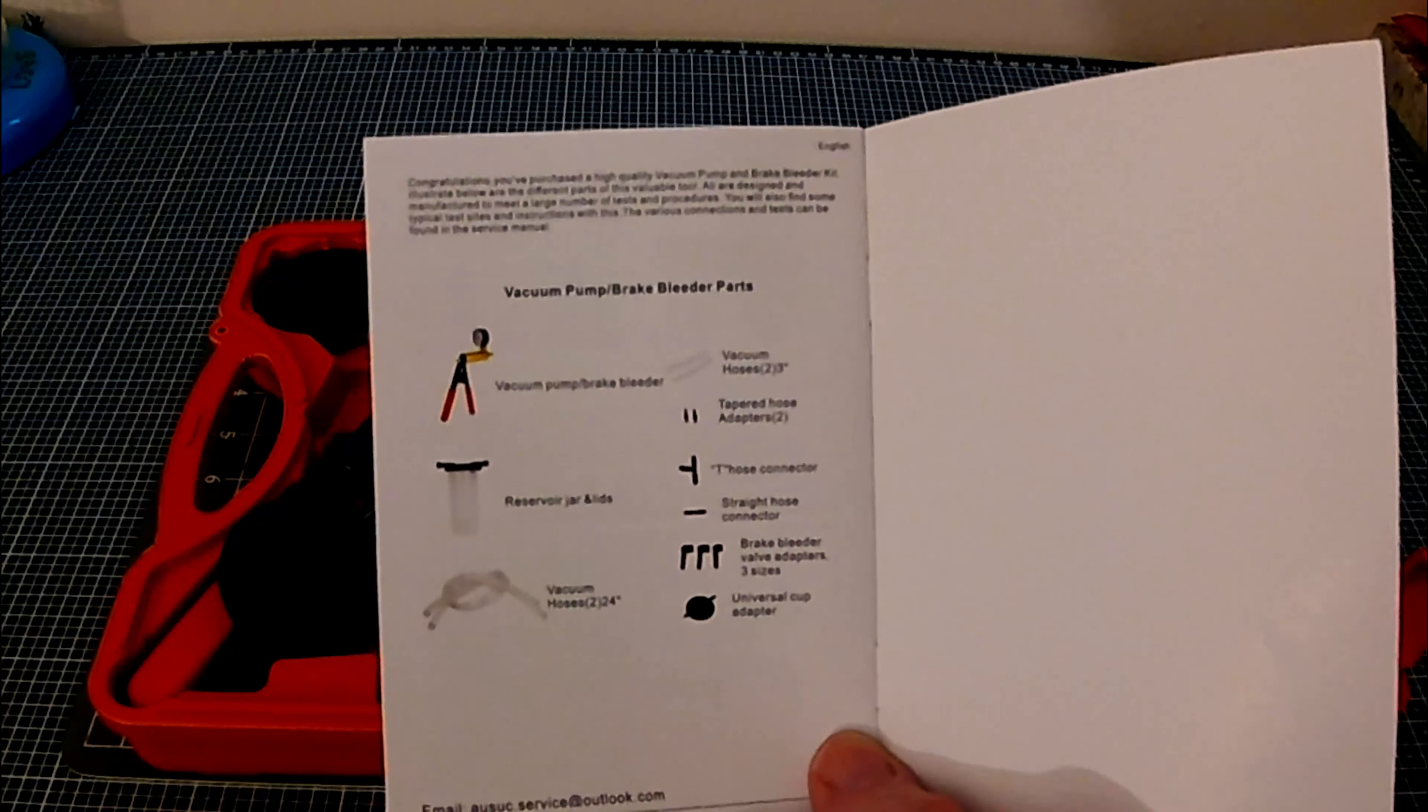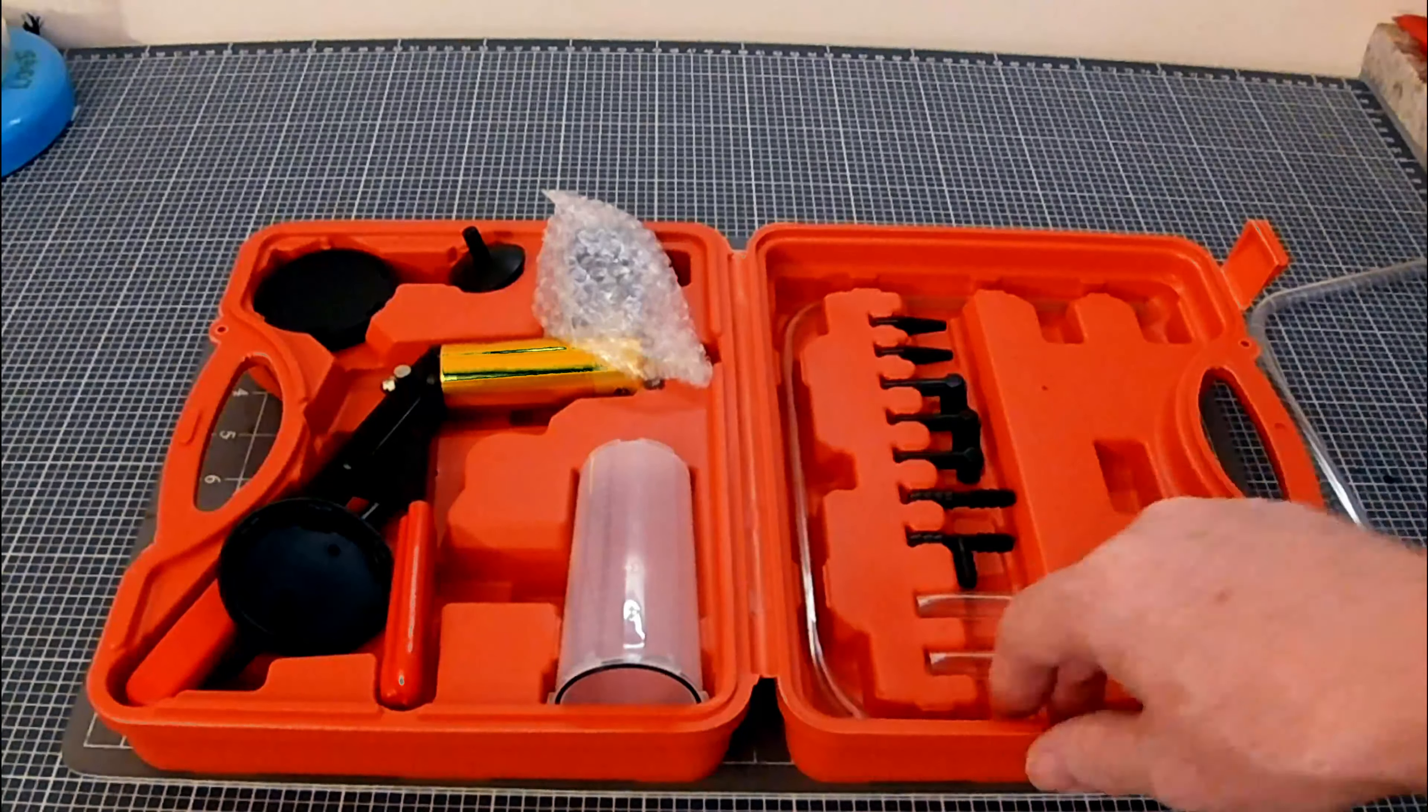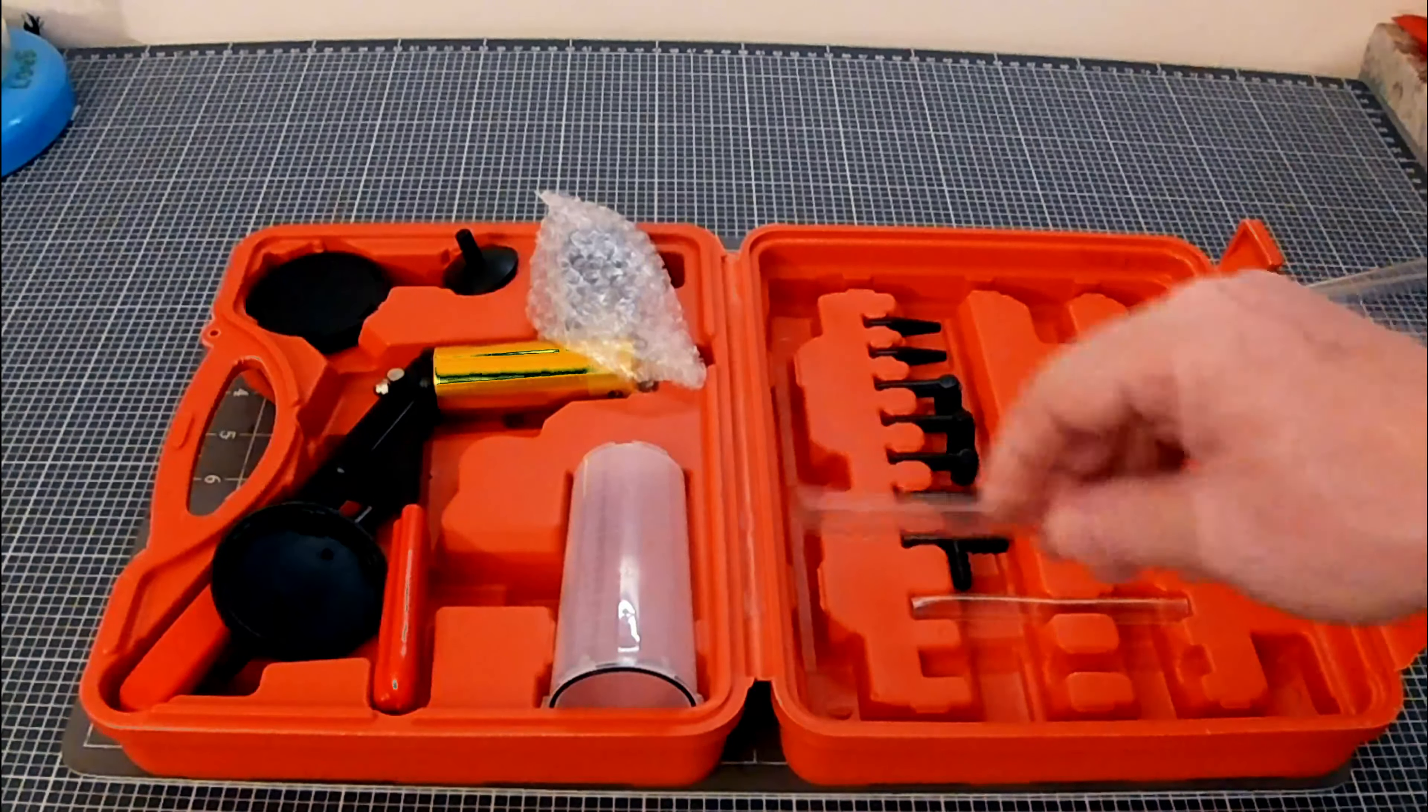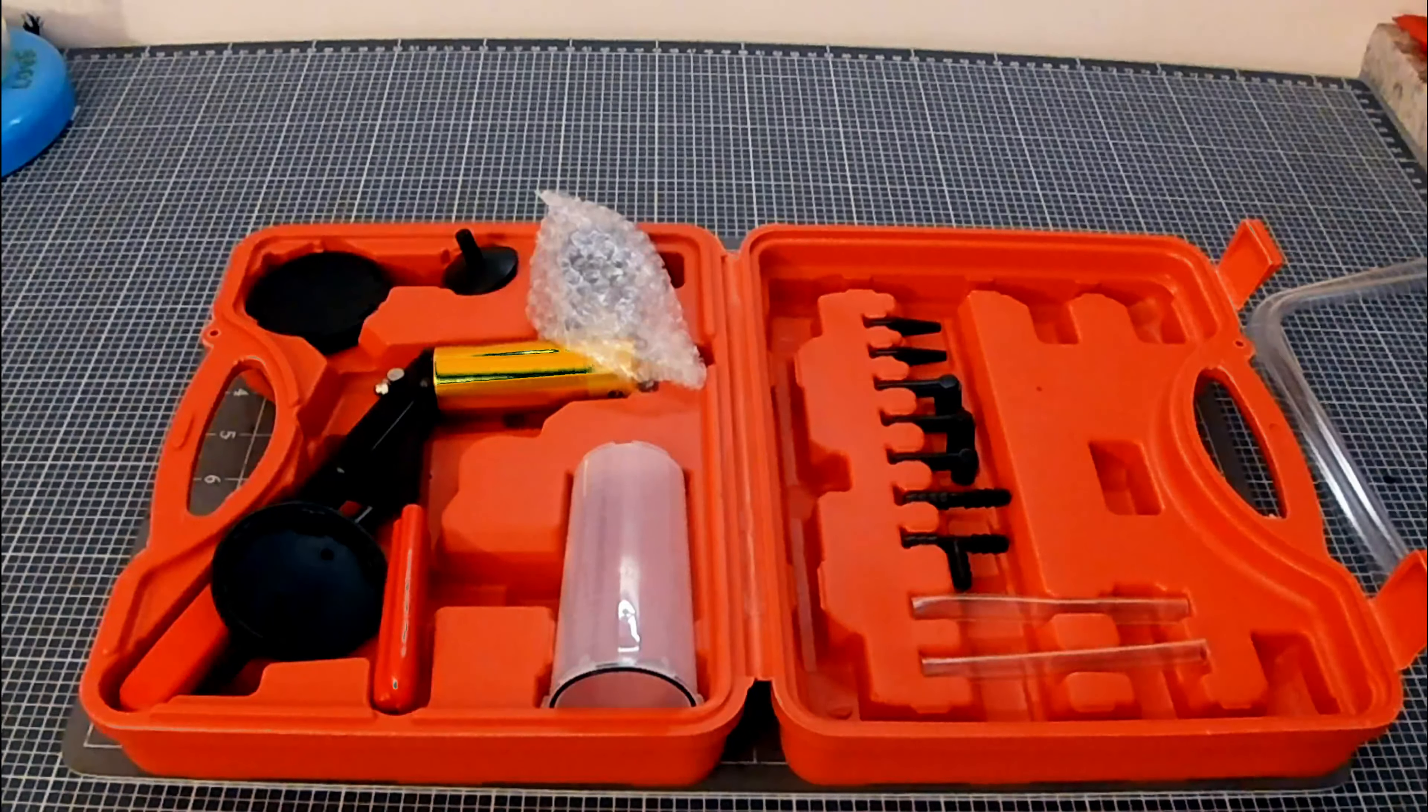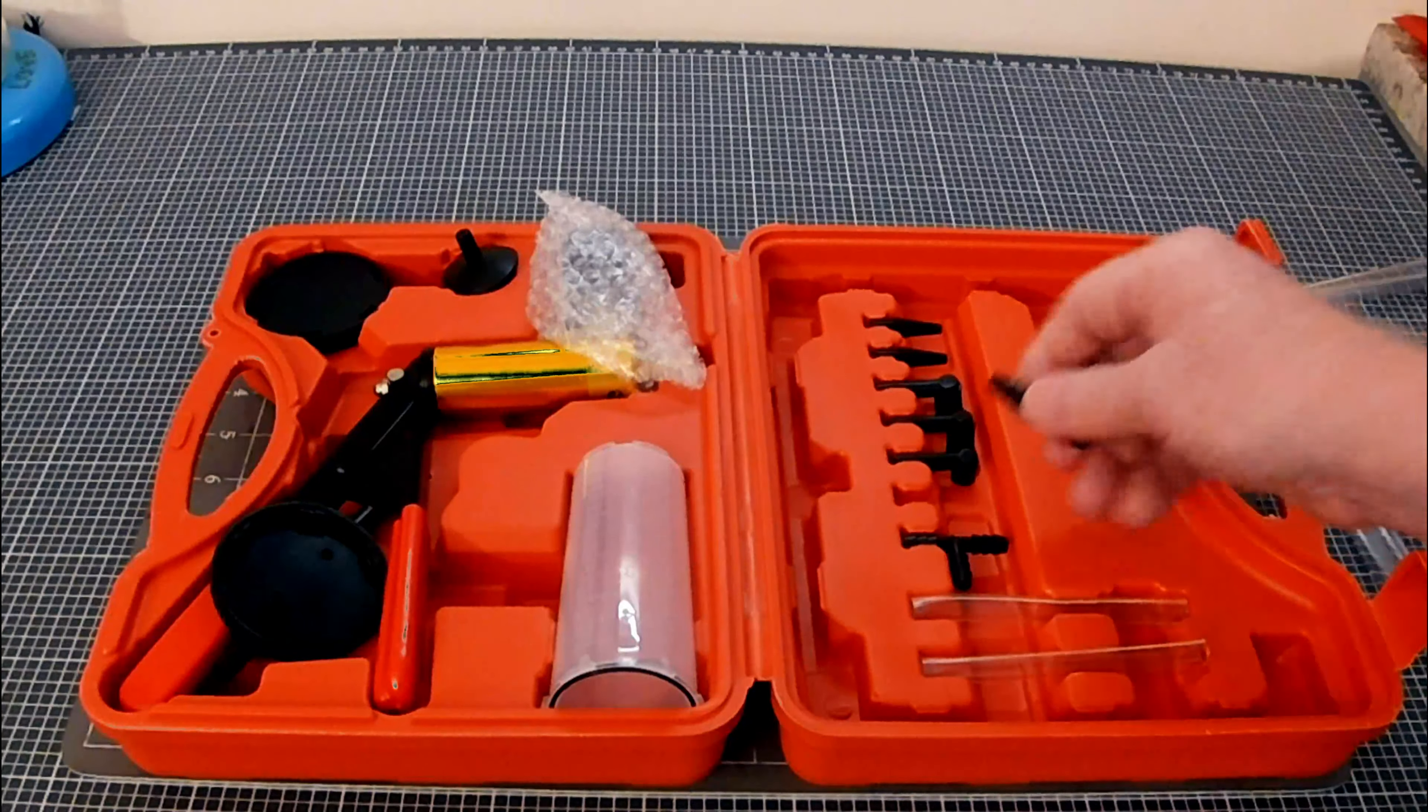What you actually have in the top: you've got two hoses, one will fit on the bleed nipple and the other will connect to the vacuum pump. You have two short hoses, of which you only really need one, but if you only need a short hose between the reservoir and the pump, you could use that. Then you've got a number of different nozzles, tapered hose adapters, brake bleeder valve adapters in three different sizes, and connectors if you need them.